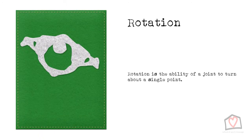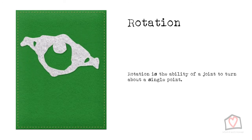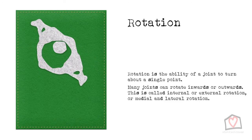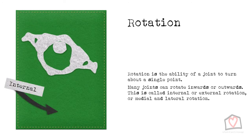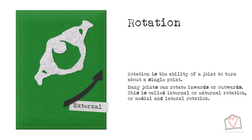Rotation is the ability of a joint to turn about a single point. This can be as straightforward as turning your head left and right, which is a rotation at the atlas-axis joint in the neck, or they can be more complex. Many joints are able to rotate both inwards or outwards — we call this internal or external rotation, also referred to as medial and lateral rotation. If rotation is described as internal, the joint is moving in towards the midline of the body; if external, such as turning your foot out, it moves away from the midline.